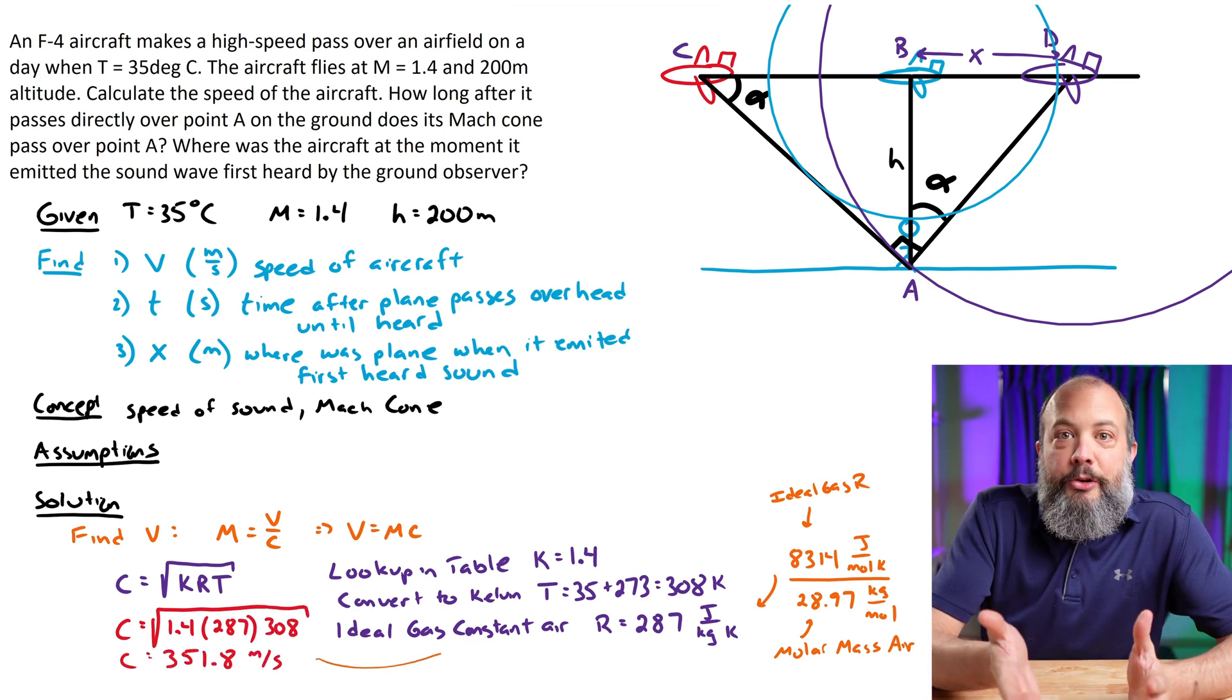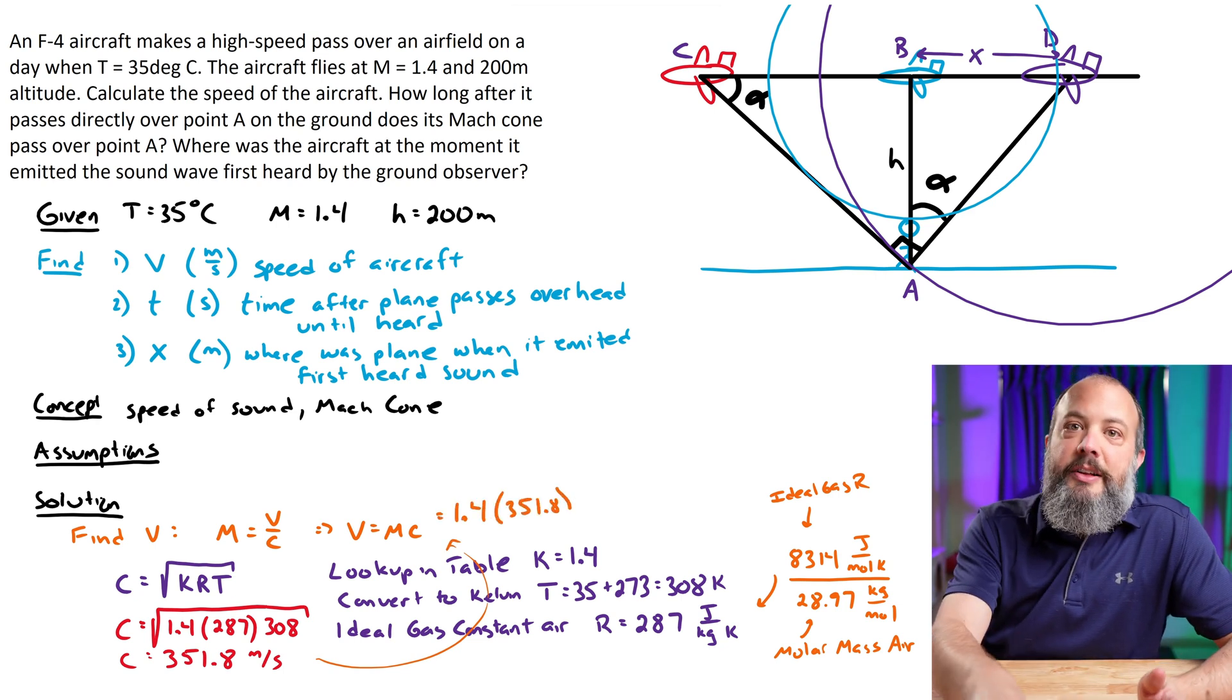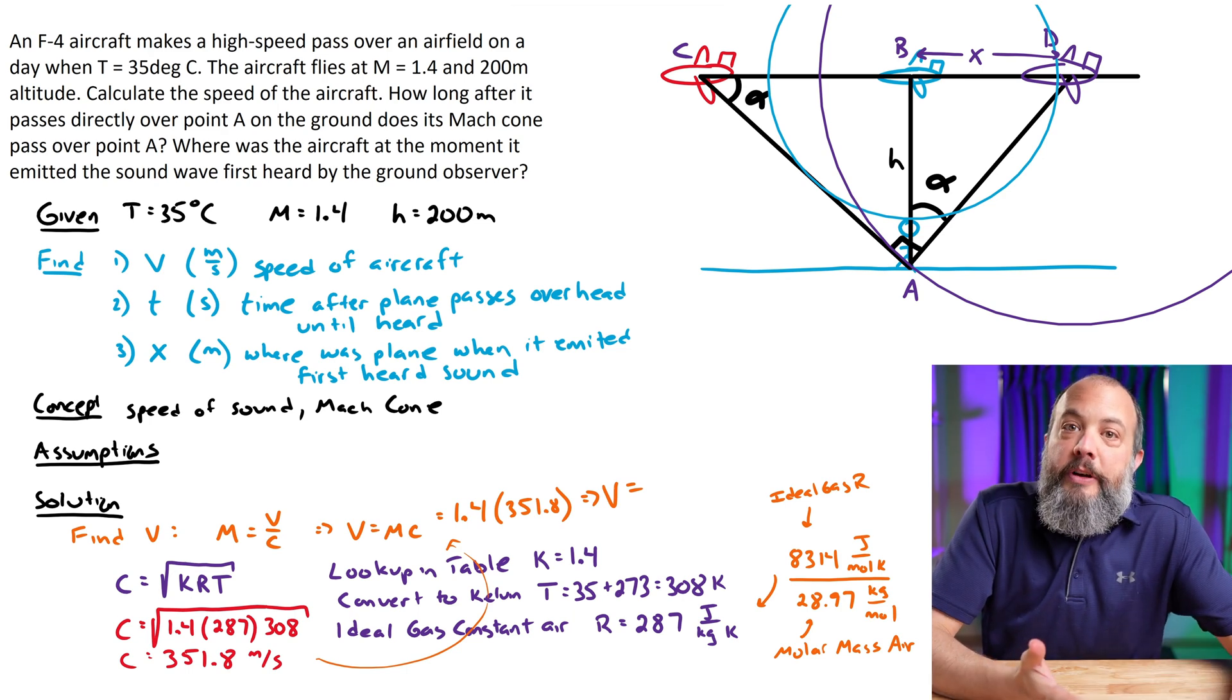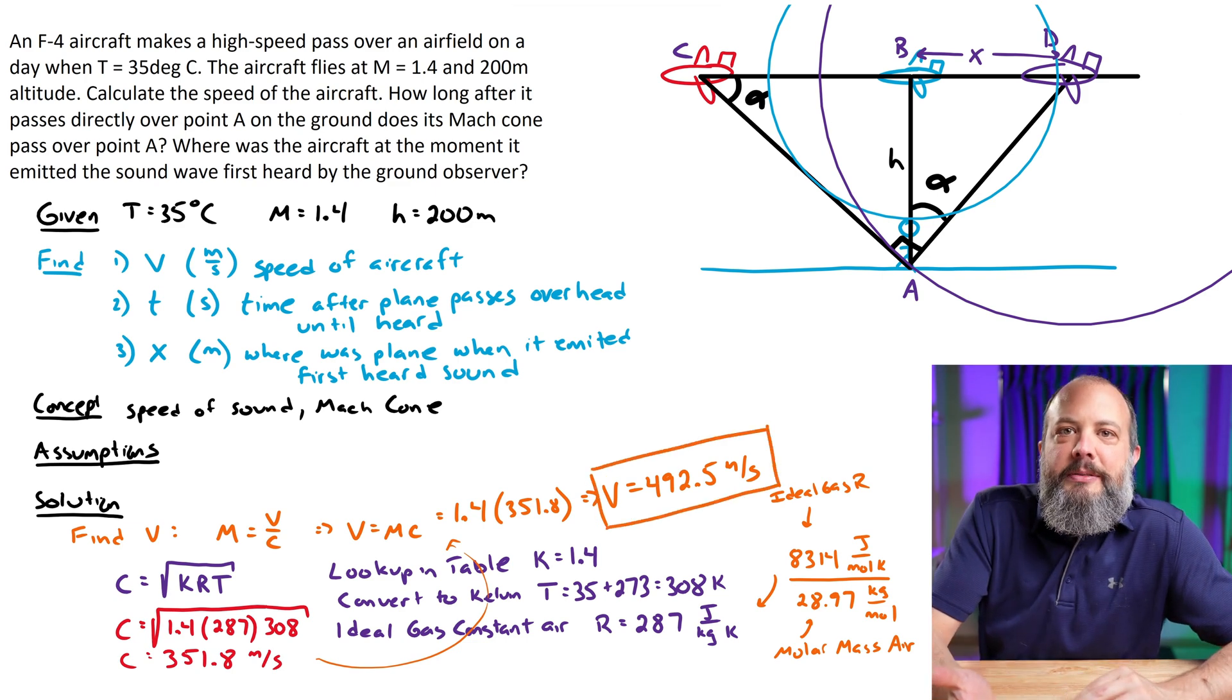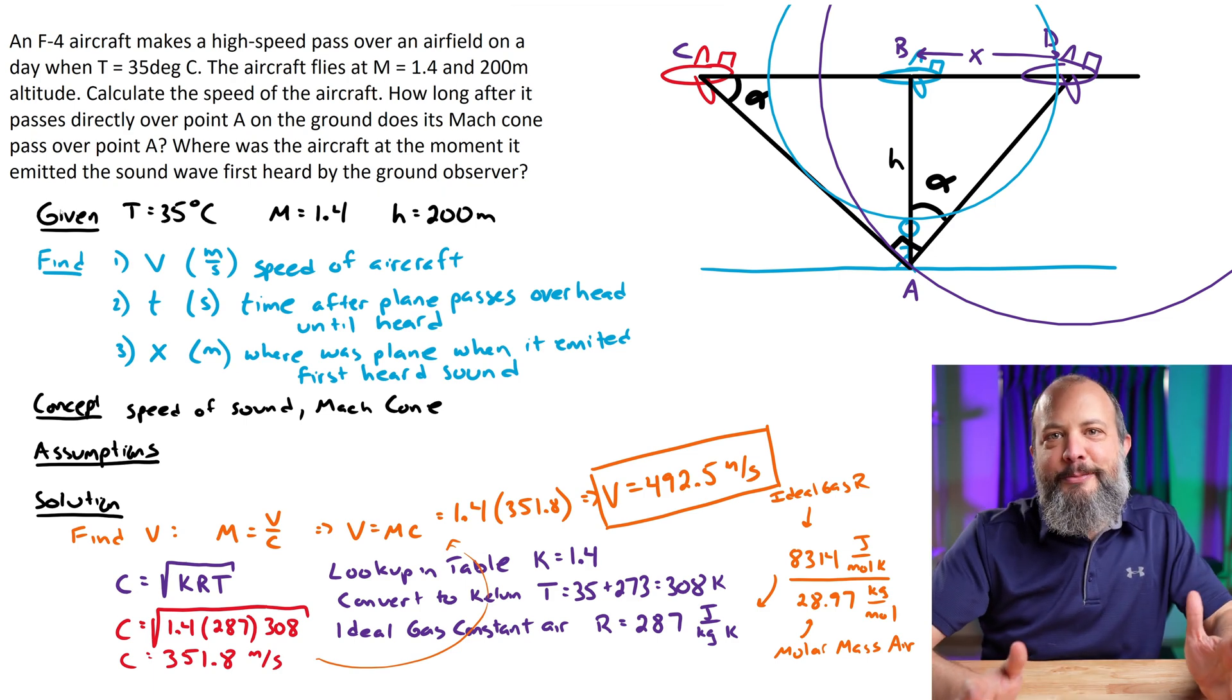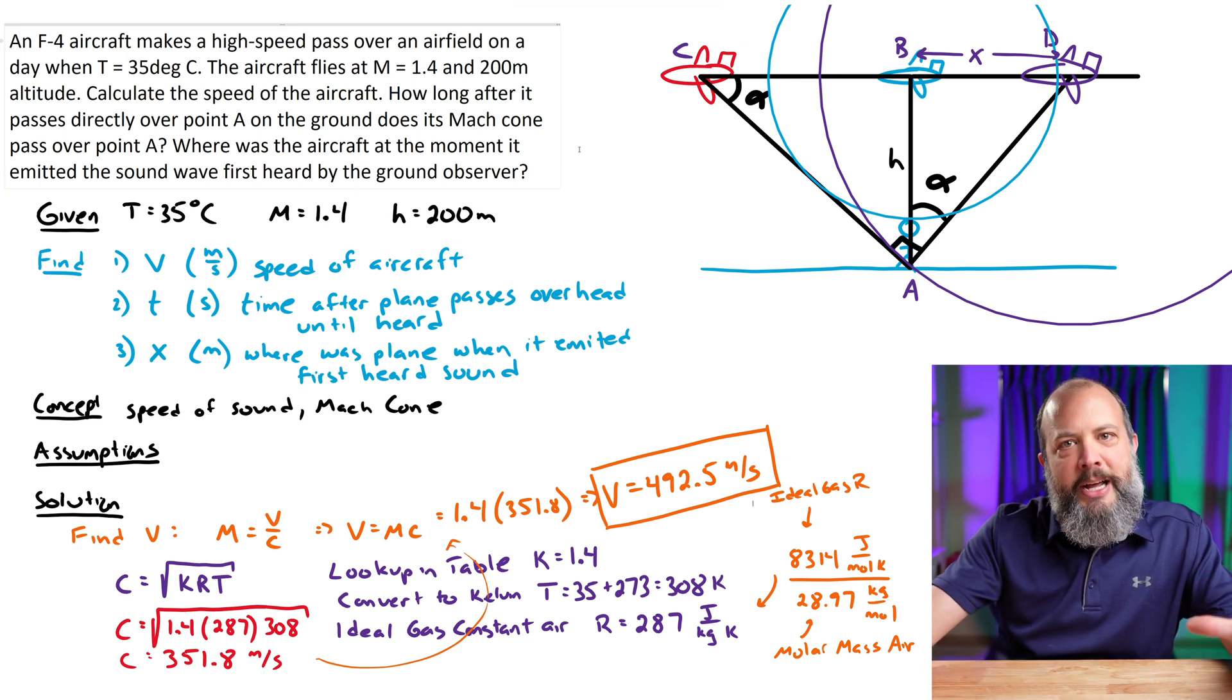To find the velocity of the aircraft, since we were given Mach number, the Mach number is just a ratio. The velocity of the aircraft divided by the speed of sound. So we multiply the speed of sound by 1.4 and we get 492.5 meters per second as the velocity of the aircraft. We're a third of the way done, but your TA Indy has been super patient. So a quick little break to let him run on his hamster wheel and then we'll get back and solve the next two parts of the problem.